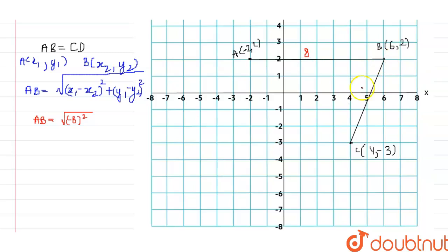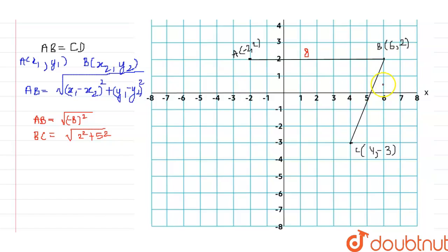In a similar manner we calculate the distance BC. BC = √((4-6)² + (-3-2)²) = √((-2)² + (-5)²) = √(4 + 25) = √29. So BC equals √29.